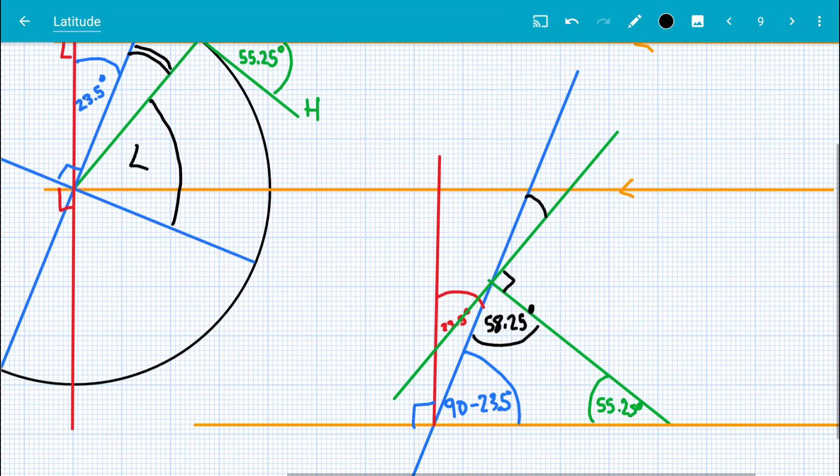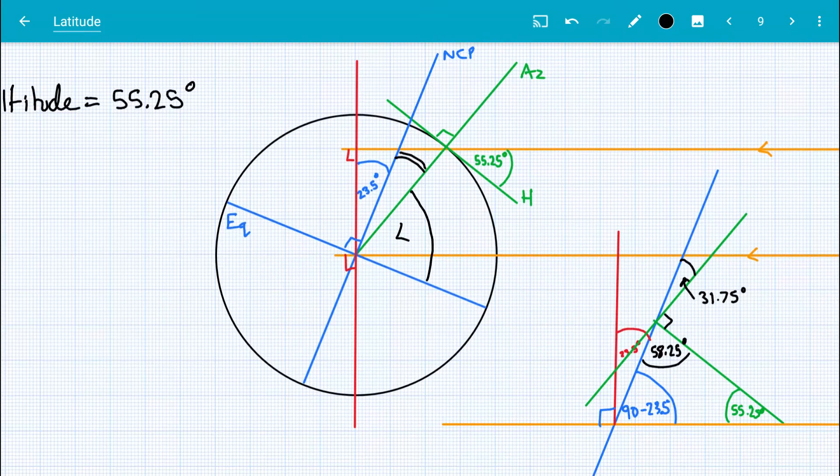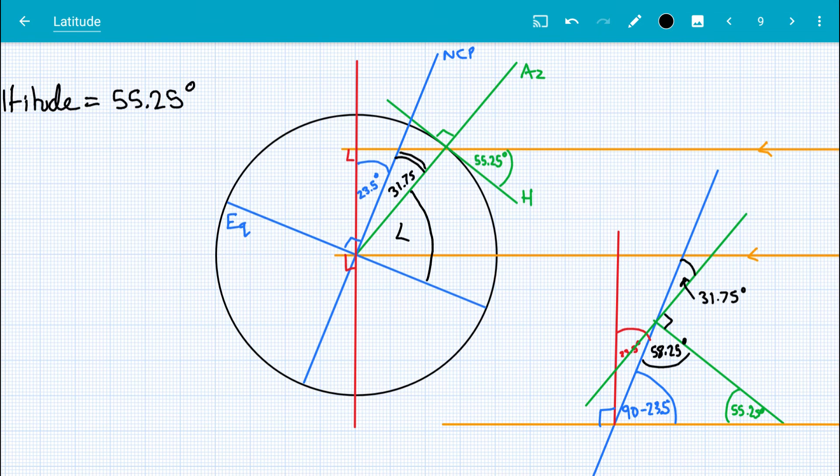So 180 subtract 90 subtract 58.25 is this angle. So that's the same as 90 subtract 58.25. And that gives us here an angle of 31.75 degrees.